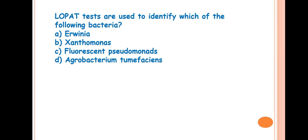Next question is, LOPAT tests are used to identify which of the following bacteria? Answer is fluorescent pseudomonads. This LOPAT test is a biochemical test generally for Pseudomonas syringae. To identify the Pseudomonas syringae that is causing any disease or not, this LOPAT test was done.